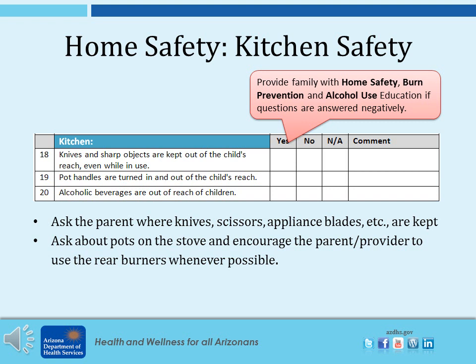Kitchen safety questions include questions about knives, pot handles, and alcoholic beverages. Ask the parent where knives, scissors, and appliance blades are kept. Ask about pots on the stove and encourage the parent to use the rear burners whenever possible. Help the parent choose safe places for appliances and make sure they are unplugged.